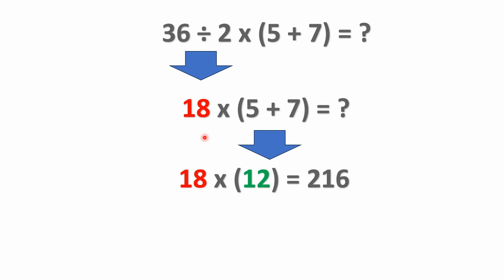I've got the 18 down here. Now, in parentheses we have 5 plus 7, so we've got to solve that. That's 12. And 18 times 12 is 216.